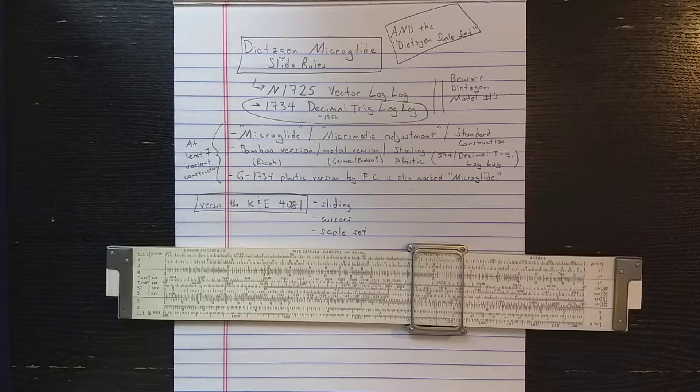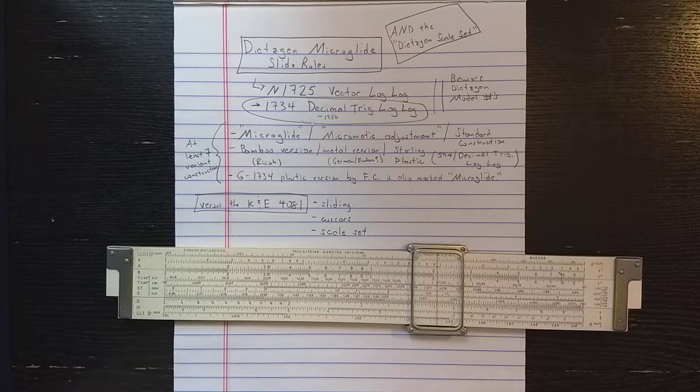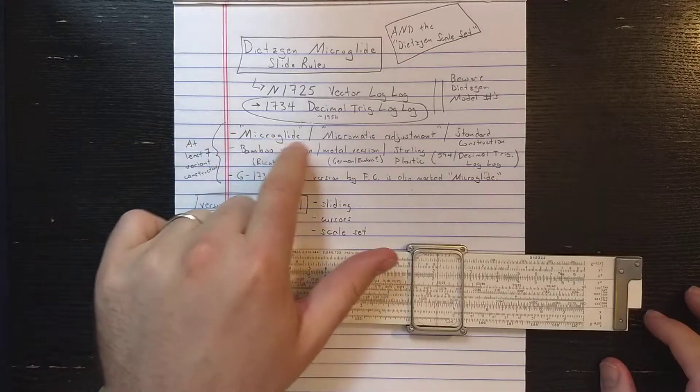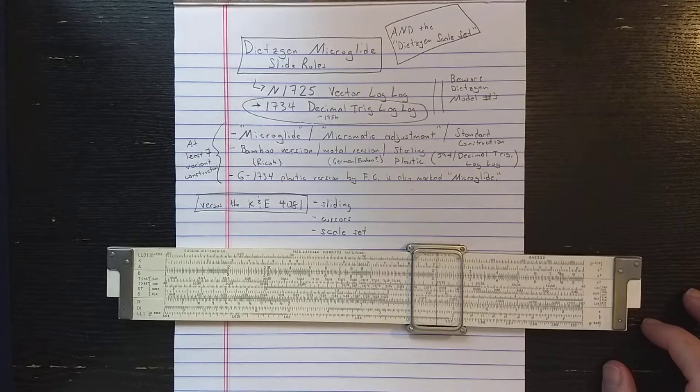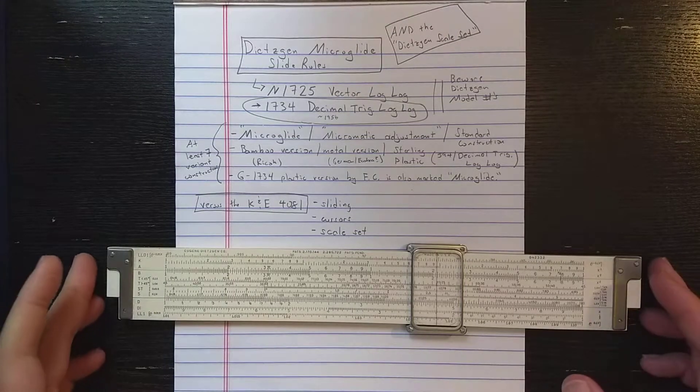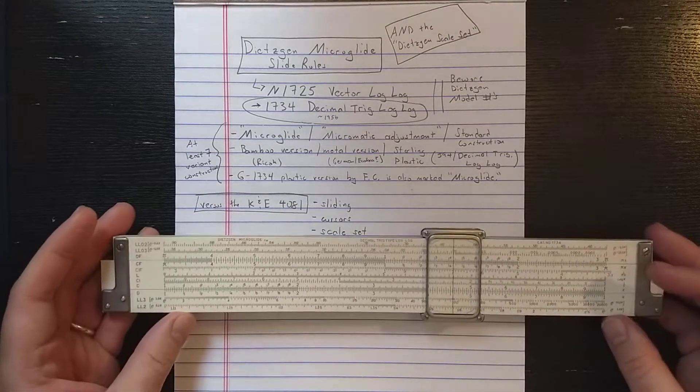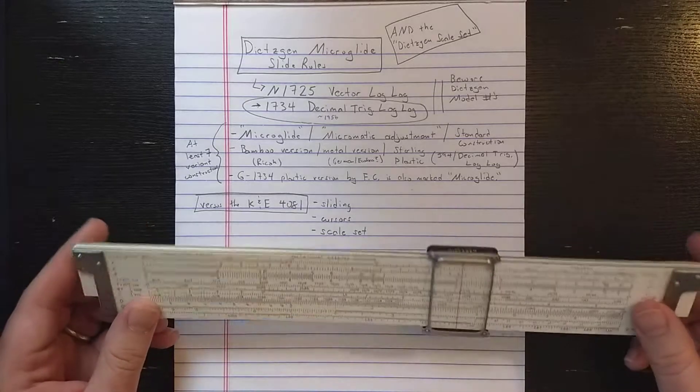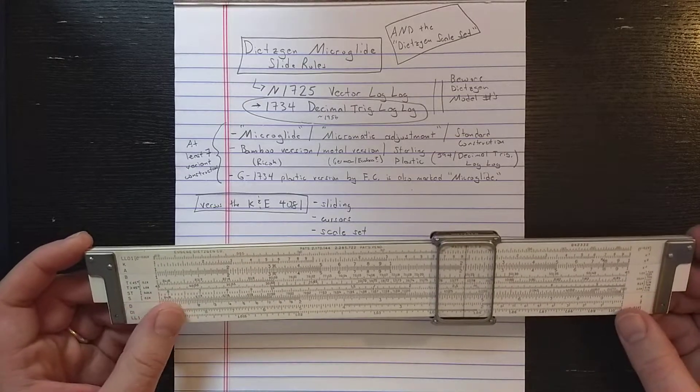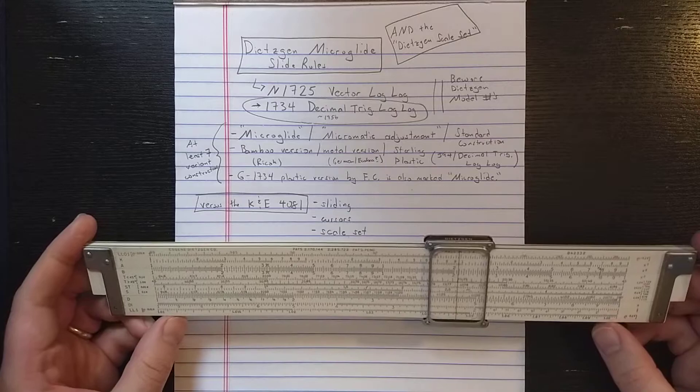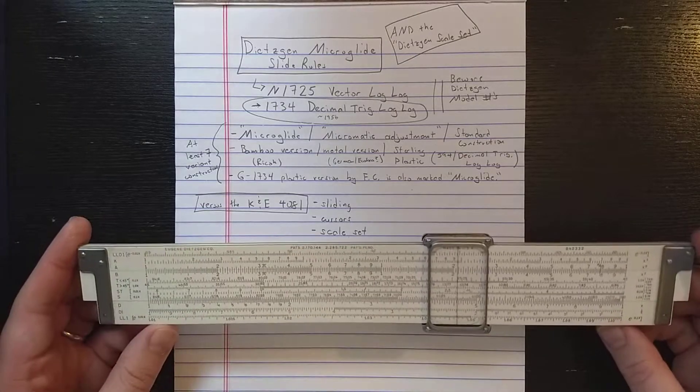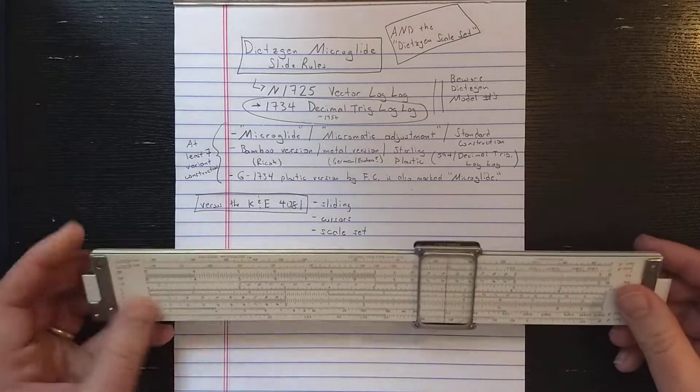First of all, microglide refers to a type of construction. The microglide construction replaces the micromatic construction of Dietzen slide rolls. This particular scale set debuts on the micromatic slide rolls in the early fifties, and then in 1956, these microglide slide rolls come out.